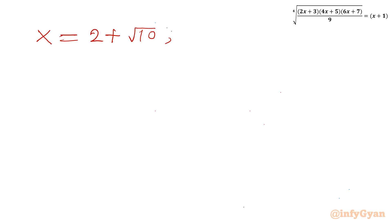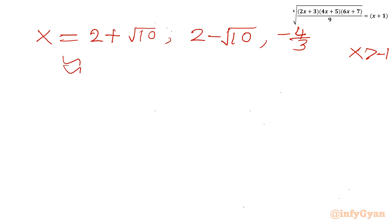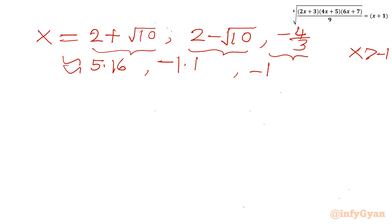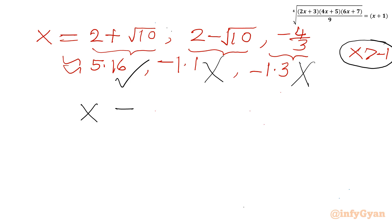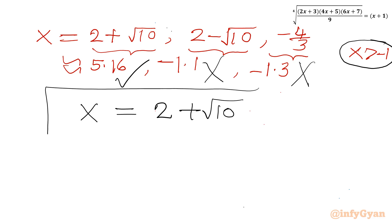Since only x = 2+√10 satisfies x > −1, the other two solutions are rejected. Our final solution is x = 2+√10. That is the end of the video.